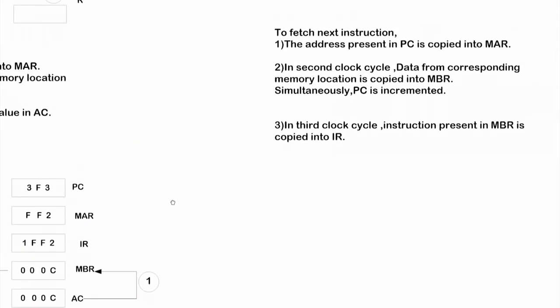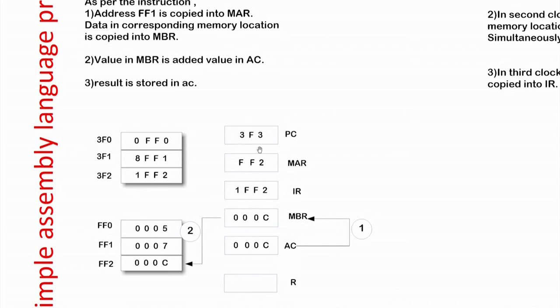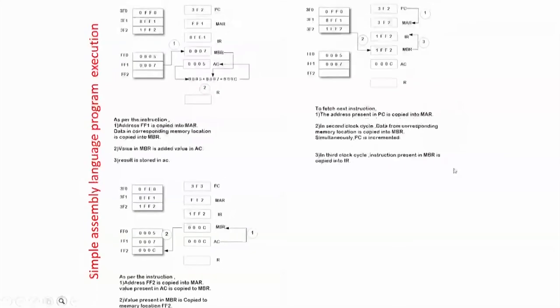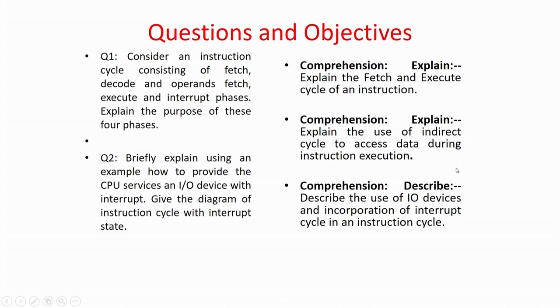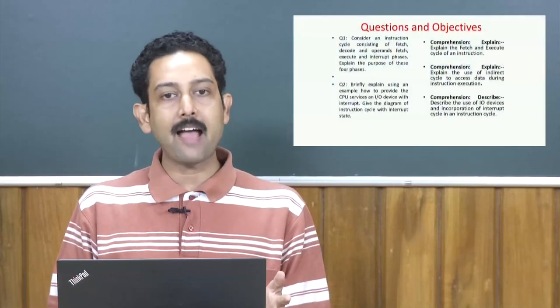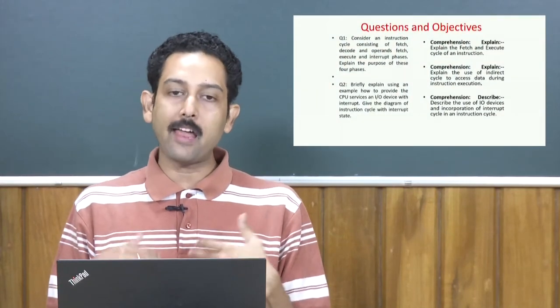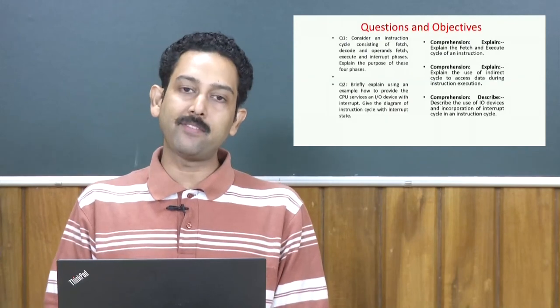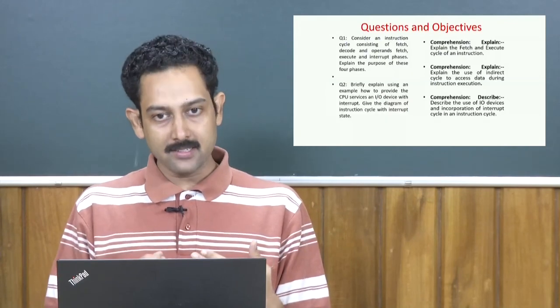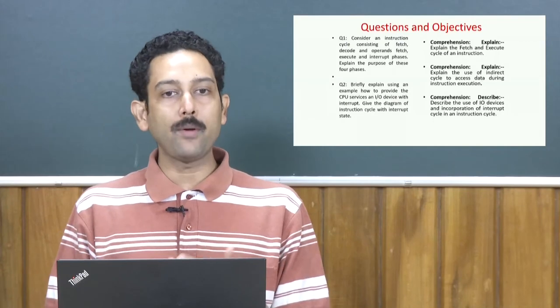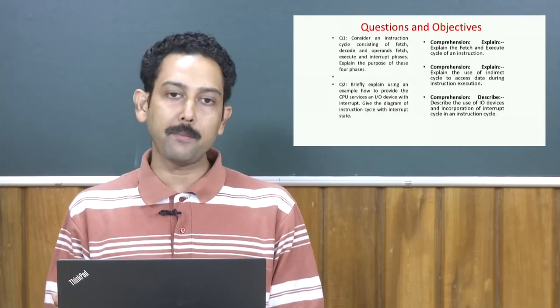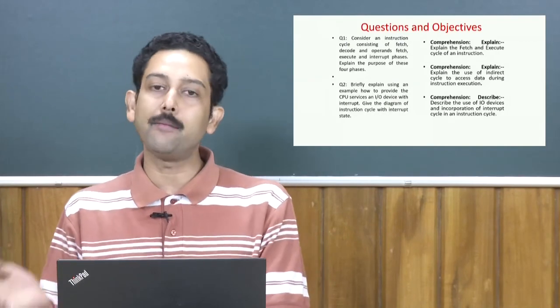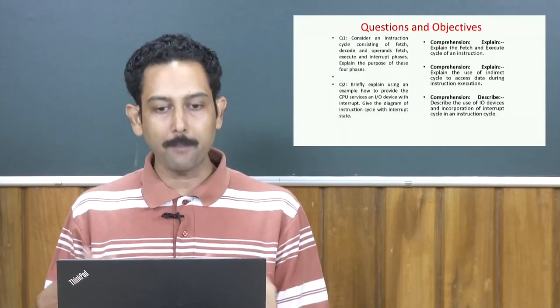After that, PC increments to 3F3, which is the next instruction — not our concern here. In this unit we have shown what an instruction is, its basic components, how it is fetched, decoded, and executed, the life cycle of an instruction, and with this worked example we have seen how instructions and operands are fetched from memory, operated on, and written back to memory.